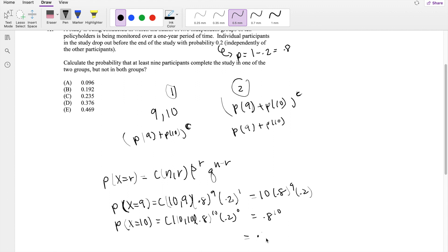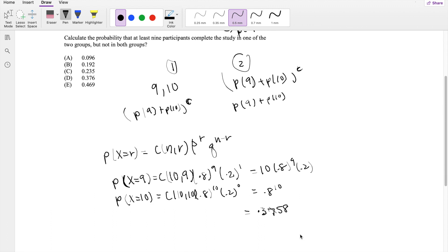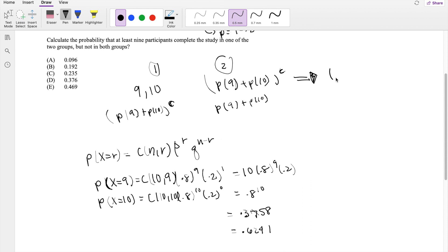So that means they don't complete the study with the probability of 1 minus 0.3758, which is equal to 0.6241. So then, in this scenario where group 1 has at least 9 and 10 complete and then group 2 doesn't, this is going to be equal to 0.3758 times 0.6241. And this one, likewise, is going to be similar. This is going to be 0.6241 times 0.3758.